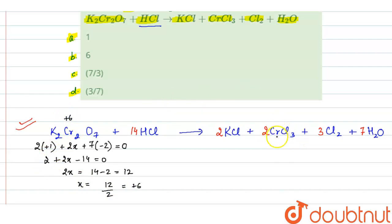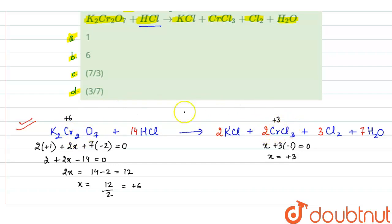Now in CrCl₃, let the oxidation state of chromium be x. We have 3 chlorine, so x + 3 × (−1) = 0, giving x = +3. Chromium is present in the +3 oxidation state in CrCl₃. As you can see, the decrease in oxidation state is from +6 to +3. Since we have 2 chromium on both sides, the total change is from +12 to +6 — meaning there is a gain of 6 electrons.